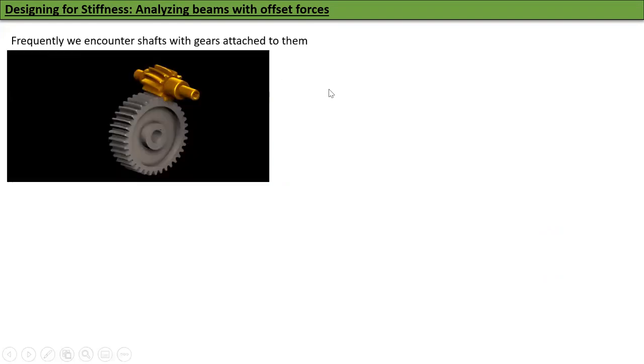Design for stiffness, analyzing beams with offset forces. Frequently we encounter shafts with gears attached to them. You can see a helical gear on one shaft and a spur gear on the other. There's some connection between them.